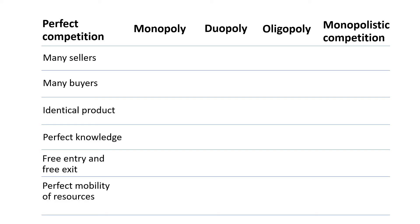For knowledge, perfect knowledge means sellers and buyers know everything, everywhere and every price. Buyers know who sells things, where they sell, and at what price they sell. It means that you know everything of everyone in every place.